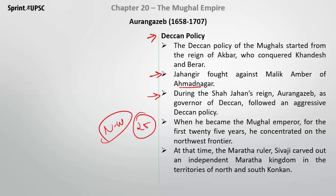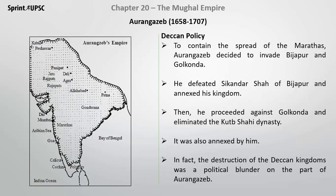When Aurangzeb became the Mughal emperor, for the first 25 years he concentrated on the North-West frontier. During this time, Shivaji carved out an independent Maratha kingdom in the territories of the North and South Konkan region. To contain the spread of the Marathas, Aurangzeb decided to invade Bijapur and Golconda.